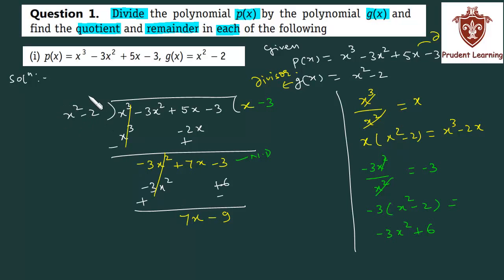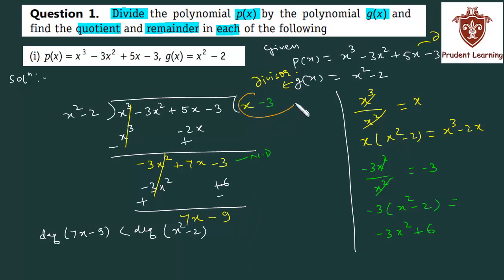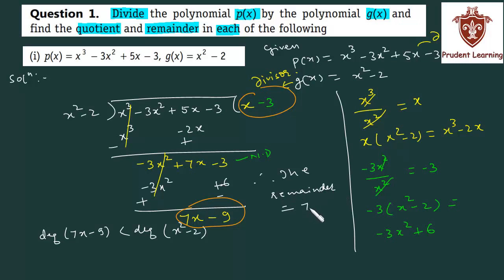अब आप देखें, यह जो 7x minus 9 है, इसकी degree कितनी है? 1. और divisor x square minus 2 की degree कितनी है? 2. Since degree of 7x minus 9 is less than degree of x square minus 2, further division नहीं कर पाएंगे. तो हमारा procedure यहीं पर रुक जाता है. Finally, the quotient is x minus 3 and the remainder is 7x minus 9. This completes our solution. Let us now move on to the next section of the same question.